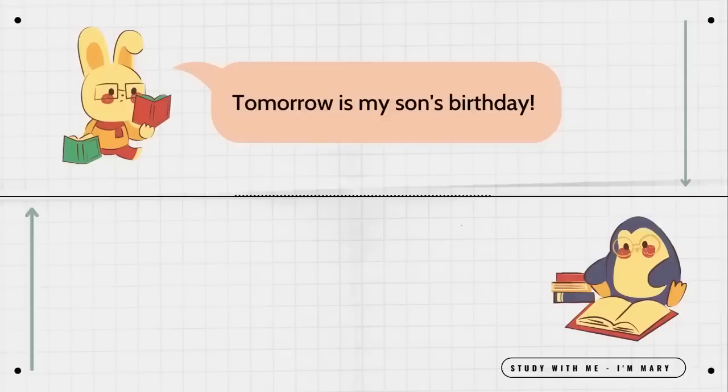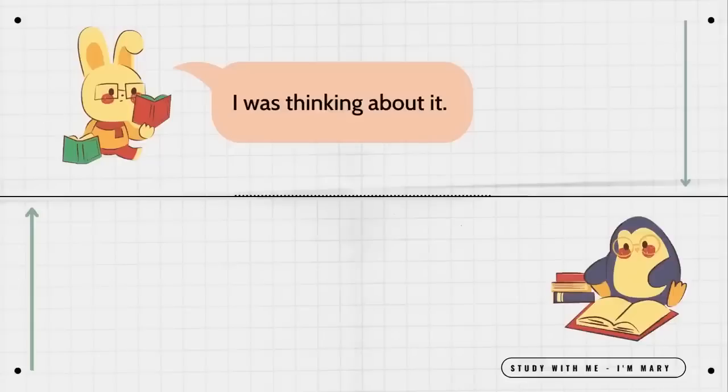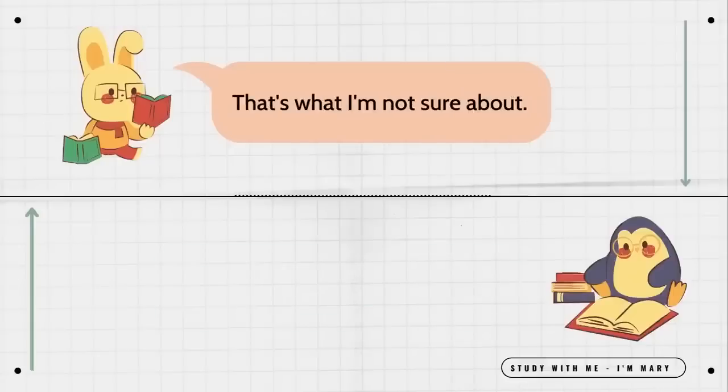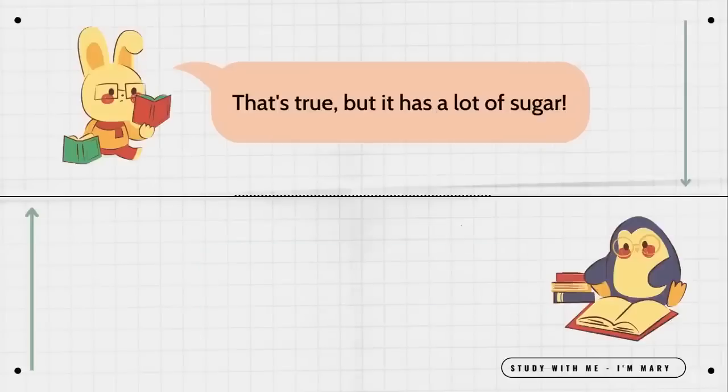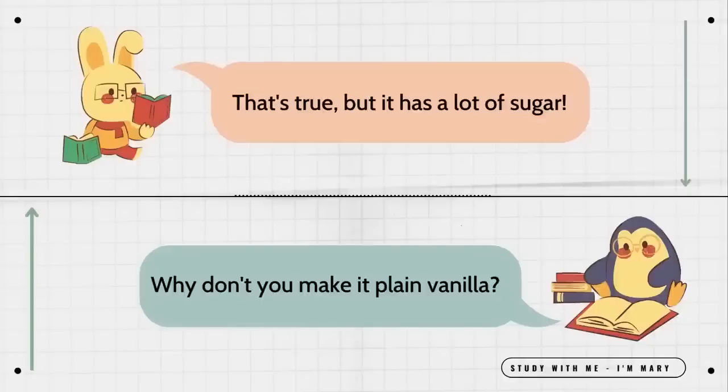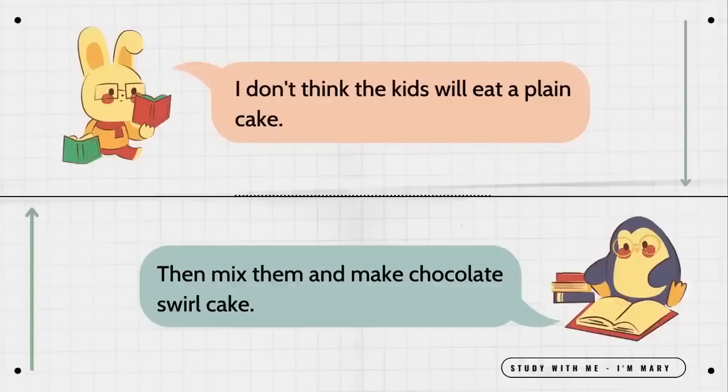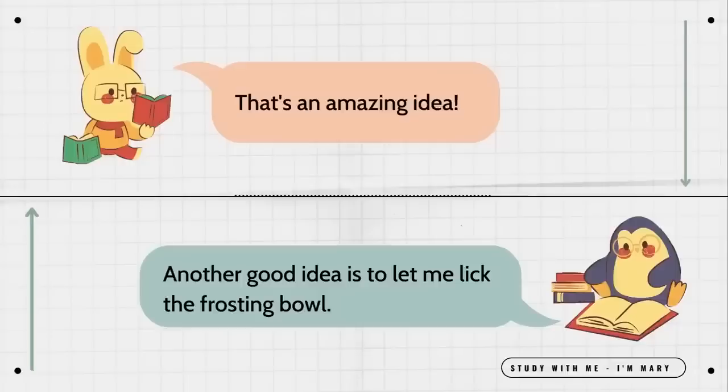Tomorrow is my son's birthday. Are you going to bake him a cake? I was thinking about it. What kind were you considering? That's what I'm not sure about. Well, all kids love chocolate. That's true, but it has a lot of sugar. Why don't you make it plain vanilla? I don't think the kids will eat a plain cake. Then mix them and make chocolate swirl cake. That's an amazing idea. Another good idea is to let me lick the frosting bowl.